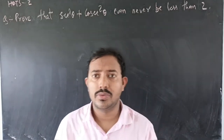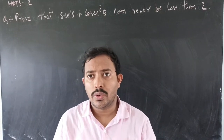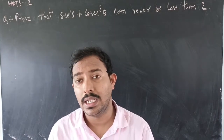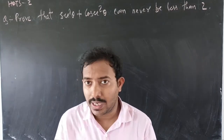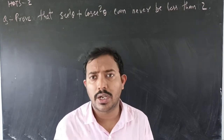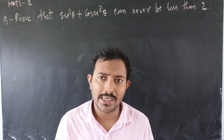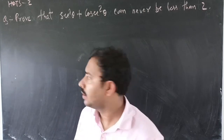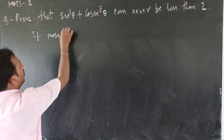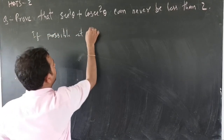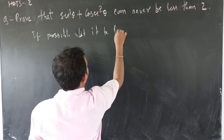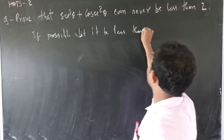Here we are with the second problem. We need to prove that sec squared theta plus cosec squared theta can never be less than 2. To prove this, we will use proof by contradiction. Let us assume that it is less than 2, if possible.